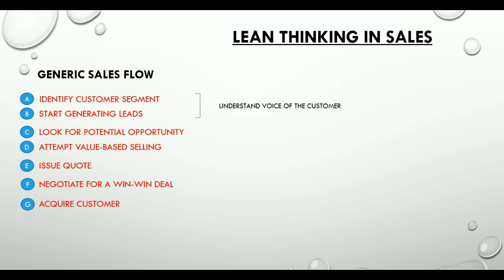Steps A and B of the sales flow relate to understanding the voice of the customer — that is, the customer's perception of our product offering. Steps C and D are about mapping the value stream and then eliminating or reducing non-value-adding activities or wastes. Typical examples of waste in sales include collecting a lot of data without being able to make sense of it, investing resources to generate leads for the wrong type of customers, misalignment of the sales program with market needs, creating reports that don't aid decision-making, or multiple sign-offs for simple activities. Getting rid of such wastes allows us to make a value-based selling attempt.